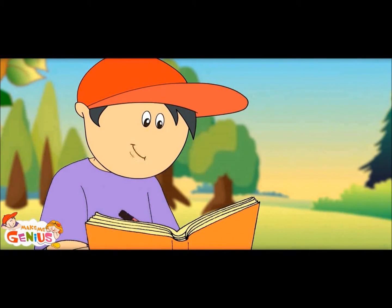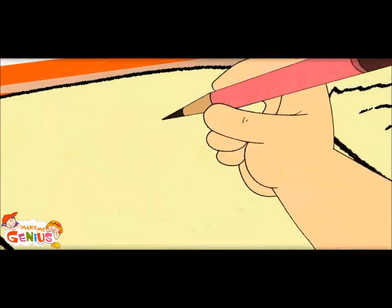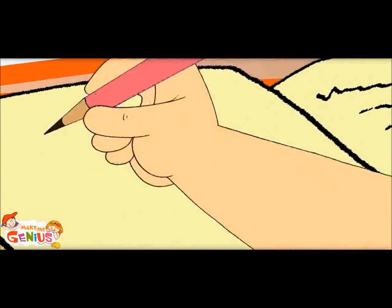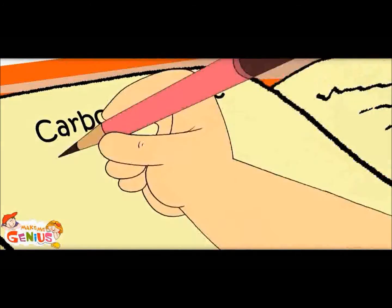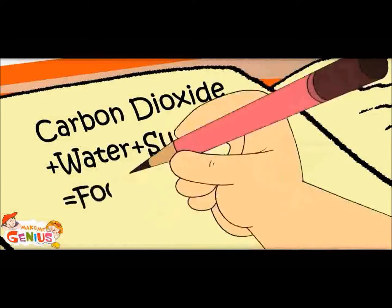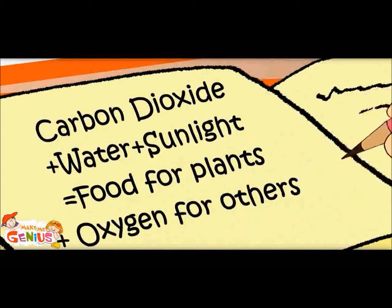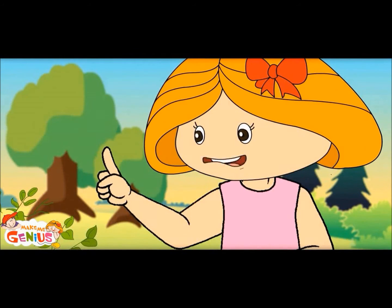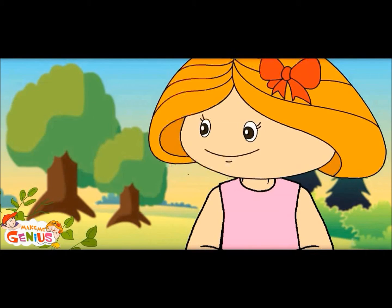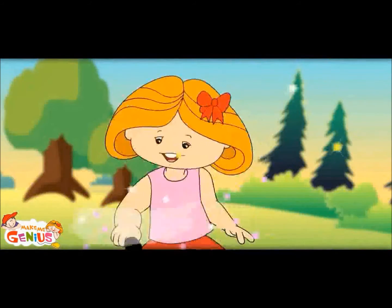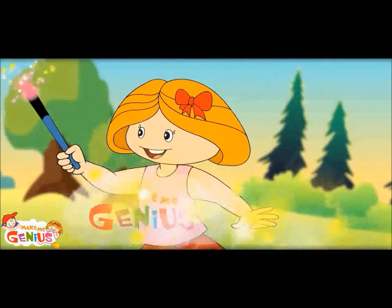Let me note it down: carbon dioxide plus water plus sunlight equals food for plants plus oxygen for others. Last point — plants make food in leaves. That is why leaves are called the food factory of the plant.